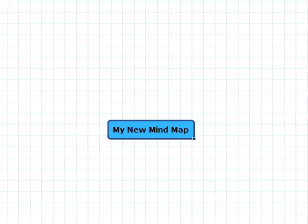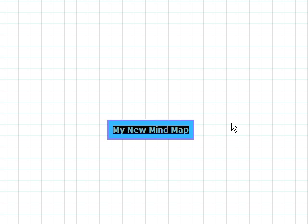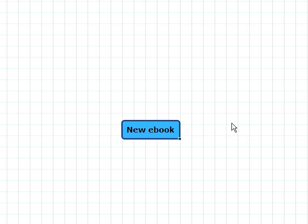The first thing you see when you create your mind map is this little blue thing — it's highlighted and it says 'My New Mind Map.' This is basically the center of your mind map, and what you want to do here is put the title of your mind map. So let's say, for instance, if you're creating a new e-book, you might call it whatever your e-book title is going to be. If you don't know, just write something like 'title coming soon.'